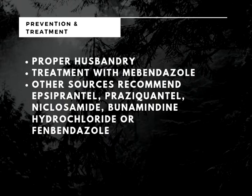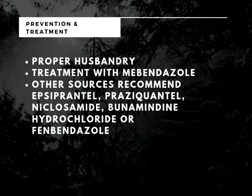T. pisiformis can be prevented via proper husbandry to prevent contamination of feed, caging, and environment with feces from infected animals. This includes proper washing of fresh fruits. Insect control is also important, as some sources report mechanical transmission by blowflies. Treatment with mebendazole is reported to kill both the mature and immature cysticerci. Other sources recommend epsiprantel, praziquantel, niclosamide, bunamidine hydrochloride, or fenbendazole.